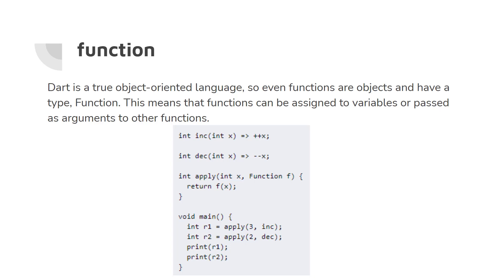Dart is a true object-oriented language, so in Dart even functions are treated as objects and the type of functions is 'Function'. That means we can pass a function as a parameter to other functions. Let's go through an example to make this clear.